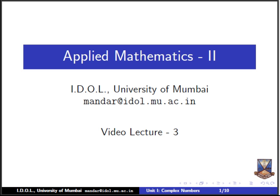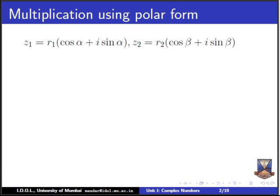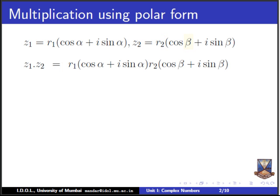Let us start with multiplication of complex numbers in polar form. If we have a complex number Z1 equal to R1 times (cos α + i sin α), where R1 is the modulus and α is the argument of Z1. Z2 is R2 times (cos β + i sin β), where R2 is the modulus and β is the argument of Z2. Multiplication is simply term by term: Z1·Z2 = R1(cos α + i sin α) × R2(cos β + i sin β).